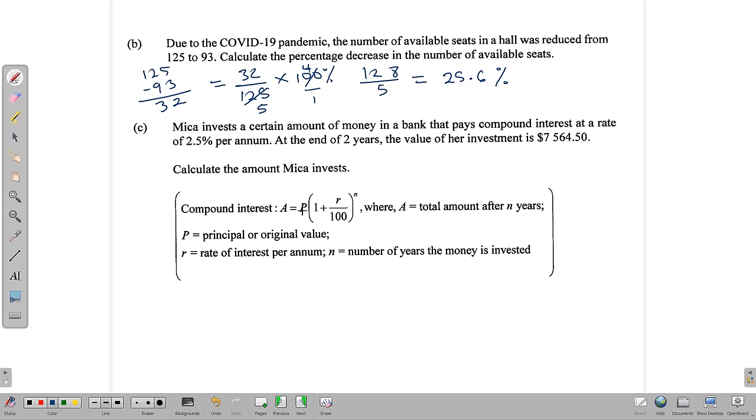This next question is definitely going to need your calculator. It says Mika invests a certain amount of money in a bank that pays compound interest at a rate of 2.5 percent per annum. At the end of 2 years, the value of the investment is $7,564.50. So we are to find the amount of money that Mika invests. And that means we're trying to find this letter P, which is for principal. Remember the r is for interest rate and the n for the number of years or compounding periods.